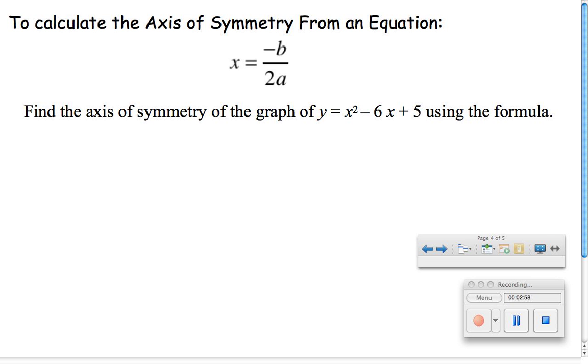So when we have the equation of a parabola, to calculate its axis of symmetry, we're going to use the following formula. We'll talk about its proof later on, but for now just know the formula. To calculate the axis of symmetry, we use the formula x equals negative b over 2a. Remember, the values of b and a come from the equation itself.